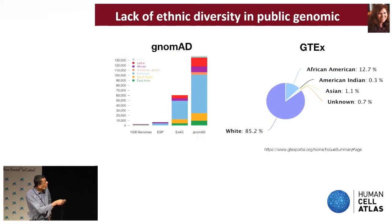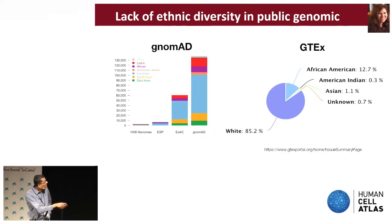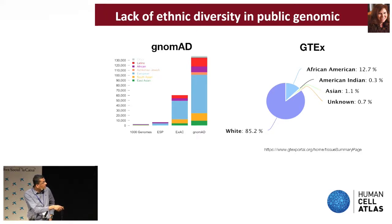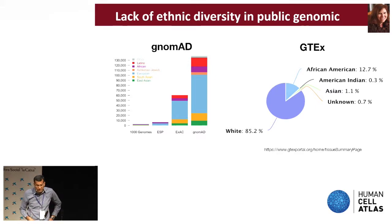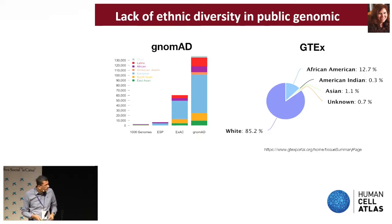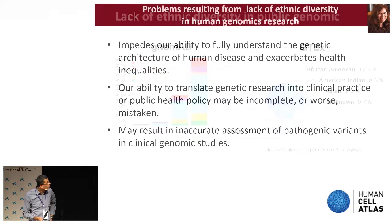Here's the NOMAD human genetics variation database by population group, and you can see that Europeans are overrepresented in this database, and many other population groups are underrepresented. Similarly, in the GTEx database, Europeans are overrepresented and other populations are underrepresented. So clearly, we're not getting a comprehensive picture of how disease risk factors and molecular mechanisms vary across populations.